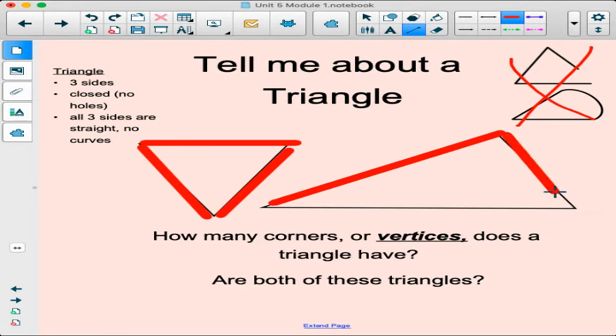Let's count. Do we have three sides? One, two, and three. Looks good to me. We have one, two, and three. Looks good to me.